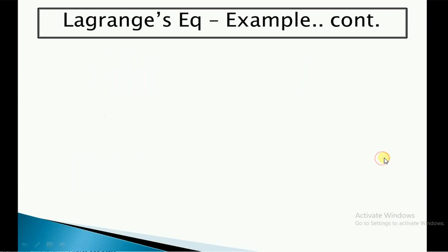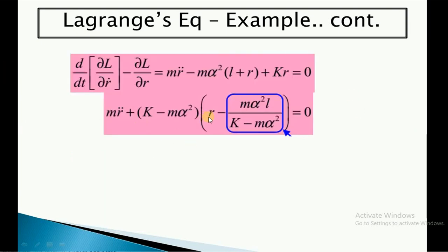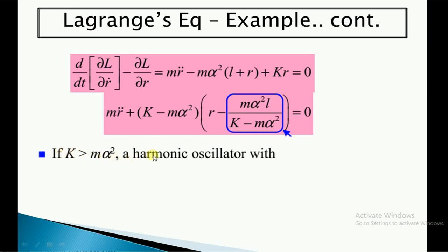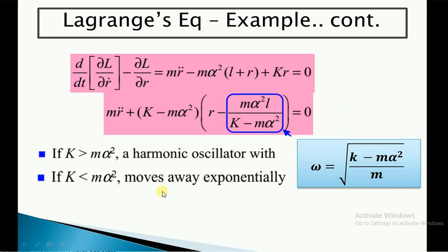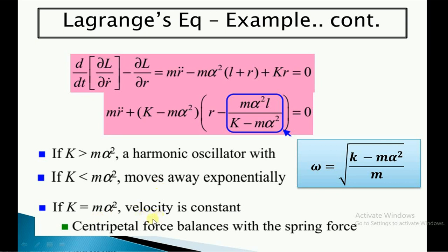Looking deeper into the equation: if k is greater than m·α², the equation becomes a harmonic oscillator with ω = √((k − m·α²)/m). If k is less than m·α², the system moves exponentially — the coefficient becomes negative. And if k equals m·α², the velocity becomes constant, meaning the centrifugal force exactly balances the spring force.